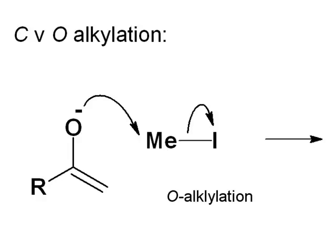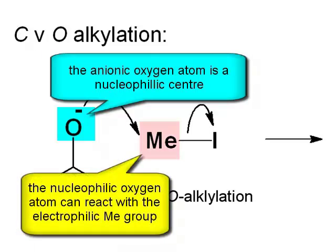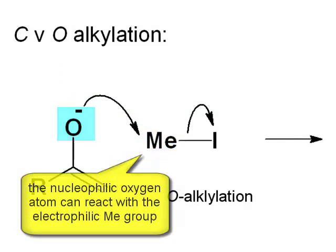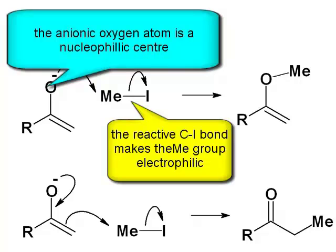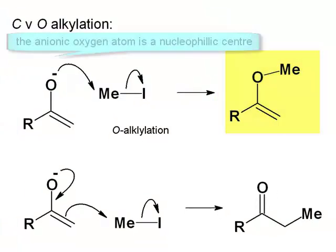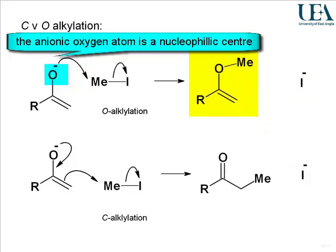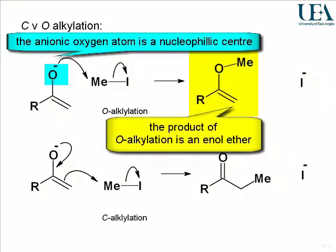Let's look at the top system first. We have an O with a negative charge — a nucleophilic centre. So we can form a bond between that oxygen atom and the methyl group and break the carbon-iodine bond. In that process, we end up with the product structure with the methyl group attached to the oxygen and a well-stabilised iodide anion to balance up the energies. This is now not an enol form; it's the ether of an enol. So you can refer to that product of O-alkylation as an enol ether.